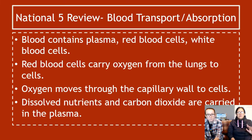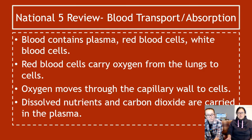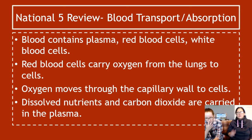A review from National 5: the blood contains plasma, red blood cells, and white blood cells. Red blood cells carry oxygen from the lungs to body cells. Oxygen moves through the capillary wall to cells. Dissolved nutrients and carbon dioxide are carried in the plasma.